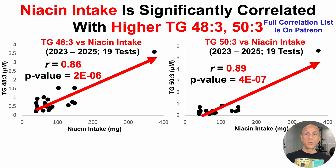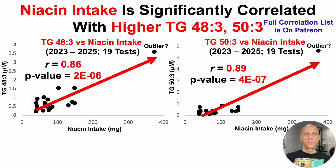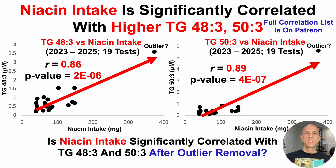Note that there may be two outliers in both plots. I intentionally increased niacin to about 350 milligrams per day for one test to test the effect of nicotinic acid supplementation on NAD. Calling this an outlier may be a stretch since it was intentional. To properly test it, I'd need many tests at 200, 300 milligrams per day and see if they fall on the trend line. So let's remove the potential outlier and see what the data looks like.